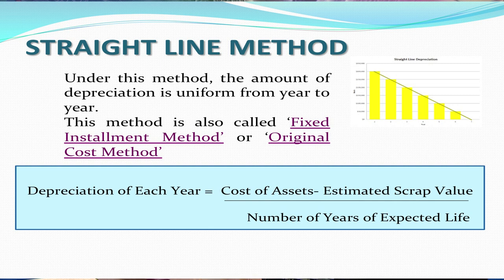Depreciation of each year under the straight line method is calculated as: cost of the asset minus the estimated scrap value, divided by the number of years of the expected useful life of the asset. This amount remains constant and uniform, which is why this method is referred to as the fixed installment or straight line method.